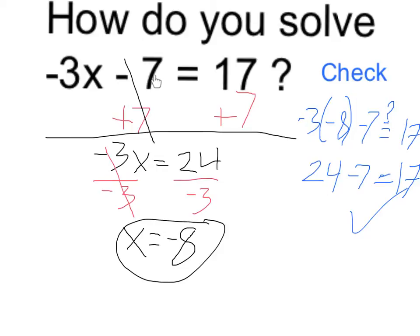So remember, I used basically a reverse order of operations. First, getting rid of the 7 by adding 7 to both sides, then dividing each side by negative 3. I hope that helped. Thank you.